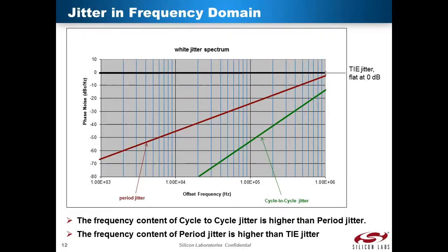A frequency domain understanding of jitter can be helpful to gain further insights into the characteristics and system effects of jitter. This plot illustrates frequency profile differences between cycle-to-cycle, period, and TIE jitter for a purely uniform, random, white noise jitter clock signal.